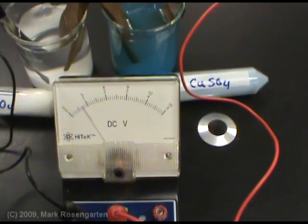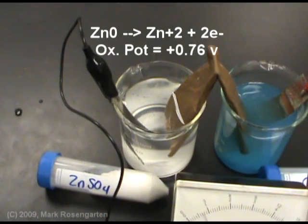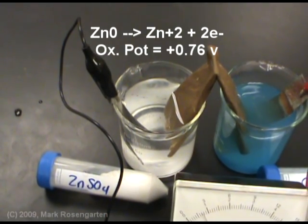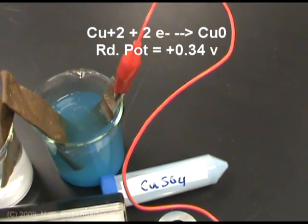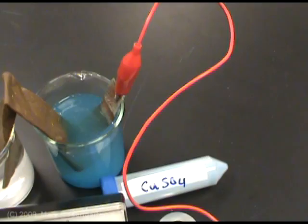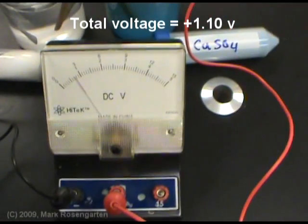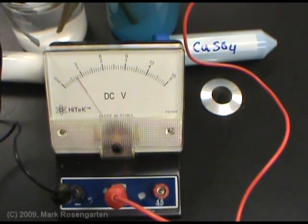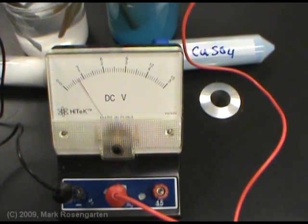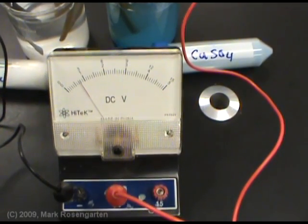For this particular reaction, the oxidation potential for zinc is 0.76 volts. The reduction potential for copper is positive 0.34 volts. So, if both of these solutions were one molar, the voltage we should be seeing would be about 1.1 volts. Obviously, these solutions are less than one molar in concentration, which is why we're seeing less than 1.1 volts as our final voltage.